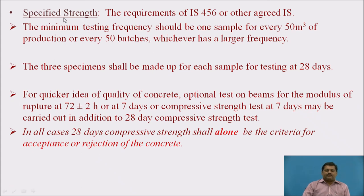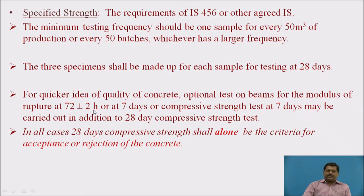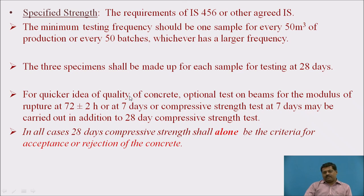Regarding specified strength, the requirements of IS 456 must be satisfied by ready-mixed concrete. Sampling can be done after every 50 cubic meters or every 50 batches, whichever has a larger frequency. Three specimens shall be made for each sample for testing at 28 days. For a quicker idea, you can take a modulus of rupture test after 3 days, or compressive strength after 7 days. But in all cases, 28-day compressive strength alone shall be the criteria for acceptance or rejection of the concrete.